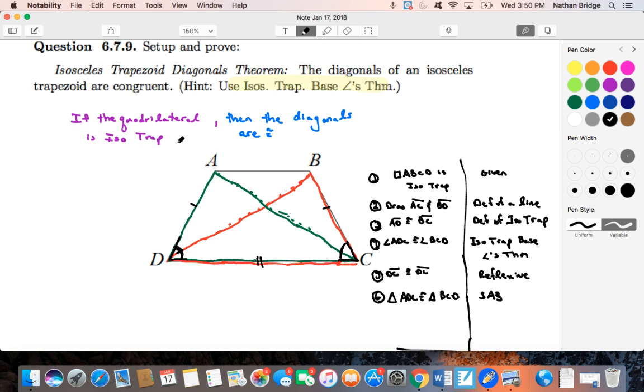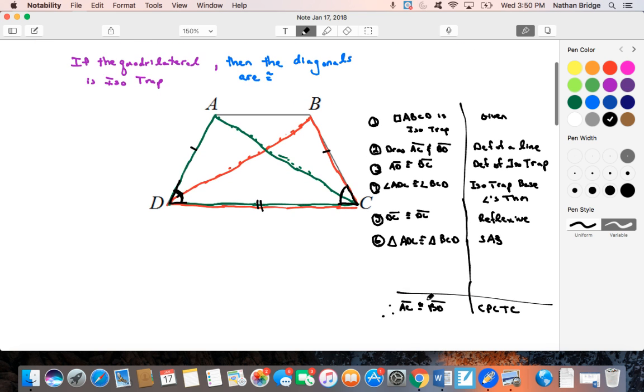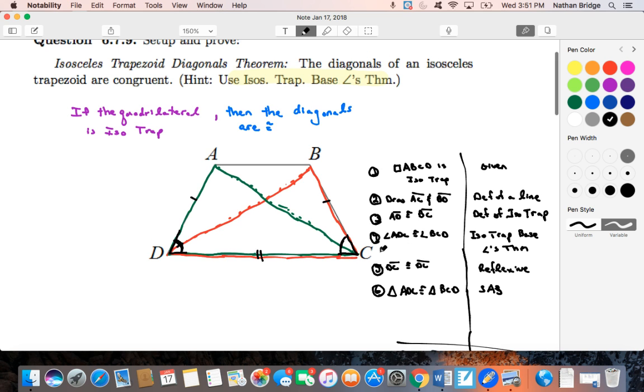We had to rewrite the theorem as an if-then conditional statement, figure out what our given was and what it is that we're trying to conclude, identify these diagonals, draw them in, and then notice that these two triangles, A, D, C, and B, C, D, if we found out these were congruent, then we would know that the two diagonals were congruent. That was our overall strategy, and it worked out just well for us.